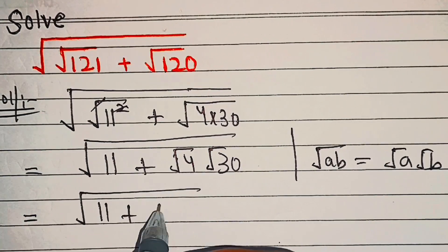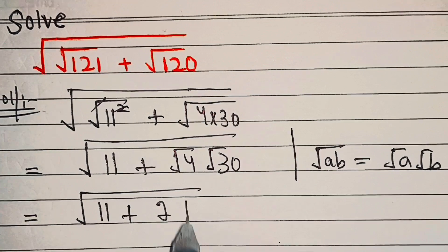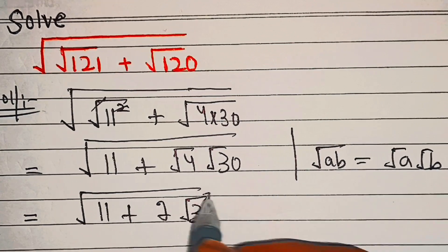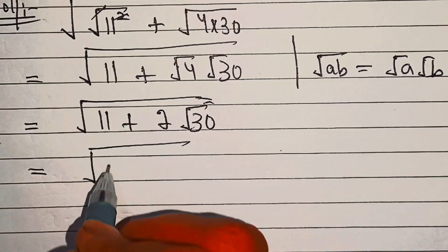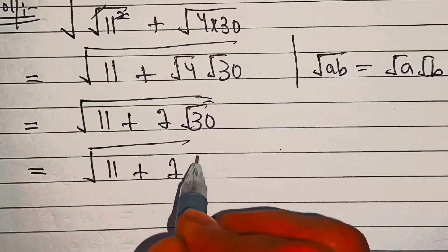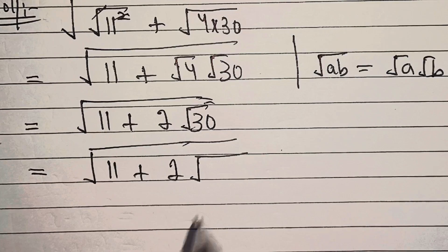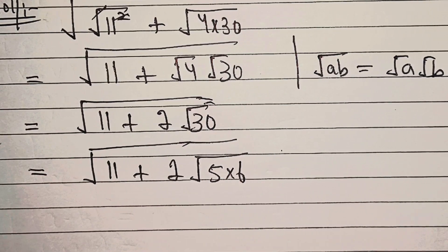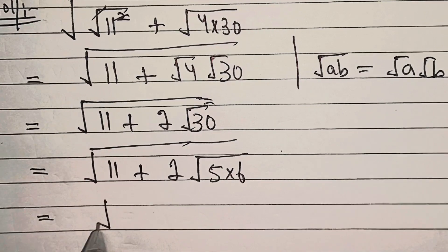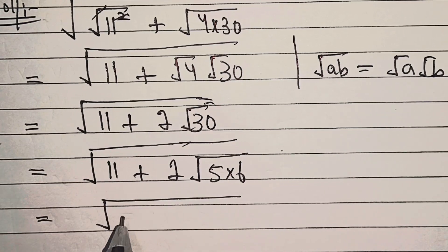plus root of 4 is 2 into under root 30. So this is root of 11 plus 2 into root of 30. We'll factorize this 30 as 5 into 6. Now this 11 can be written as...